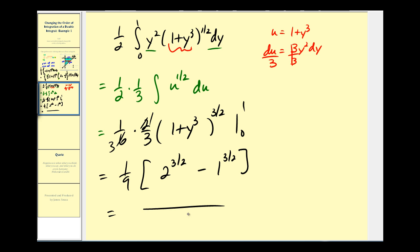Simplifying this, we have a denominator of nine. 2 to the three-halves is the same as 2√2, and this would be minus one. So you can see, once we switch the order of integration, we were able to integrate this using our integration techniques. I hope you found this example helpful. Thank you for watching.